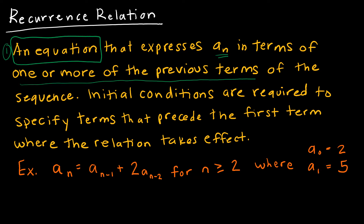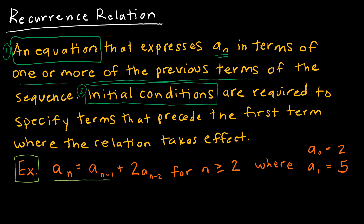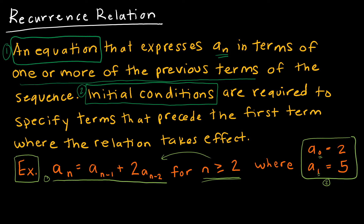Because the equation relies on previous terms, the second part of a recurrence relation is the initial conditions. The initial conditions provide a starting point — like a(sub 0), as we had for arithmetic or geometric sequences — or they could also give us a(sub 1). However many initial conditions you have will be based on your equation. For this example, the equation is given along with initial conditions, and it only works for n greater than or equal to 2, because we're given a(sub 0) and a(sub 1).